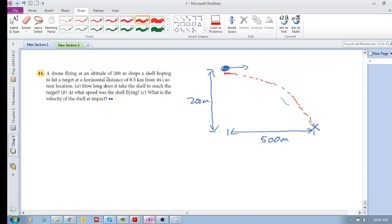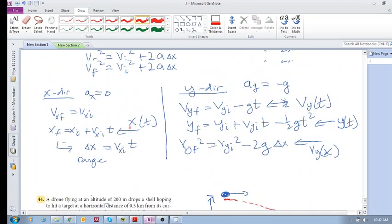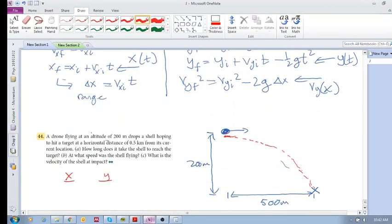Now, how long does it take the shell to reach the target? So remember, when we're dealing with projectile motion, we want to break it, we want to analyze the motion in its x direction and y direction. So how are we going to solve this problem? Well, why don't we just go and look at the x direction equations and see if that might help us. If not, then we look at the y direction equations. Remember the x direction, ax is zero. There's no acceleration because we neglect wind resistance to simplify the problem.